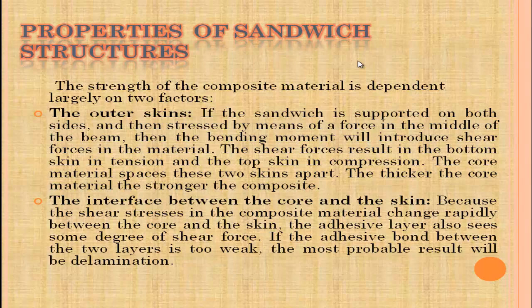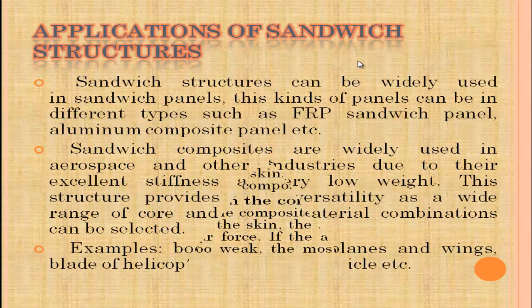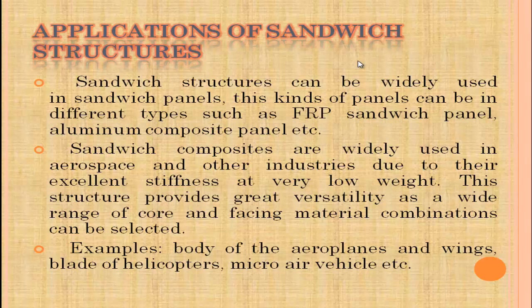Properties of sandwich structure: the strength of the composite material depends largely on two factors — the outer skins and the interface between the core and the skin. If the sandwich is supported on both sides and stressed by a force in the middle of the beam, the bending moment will introduce shear forces in the material at the interface between core and skin. Because the shear stress changes rapidly between the core and the skin, the adhesive layer also experiences some degree of shear force.